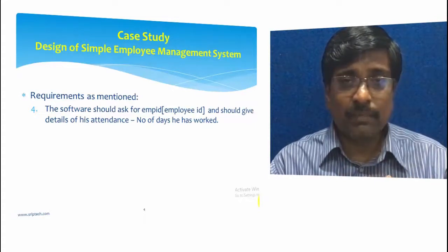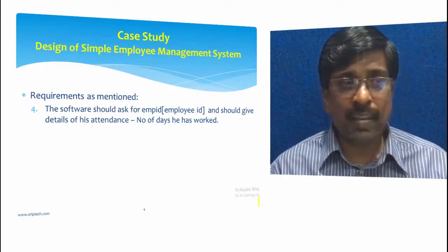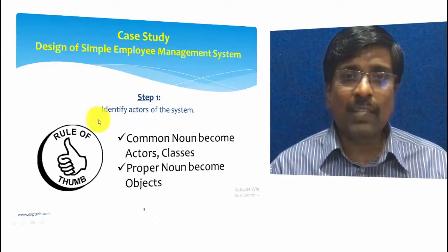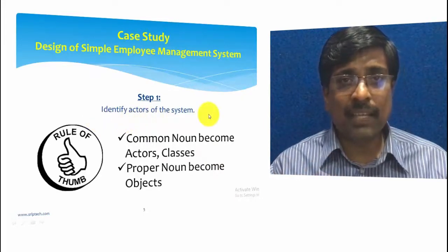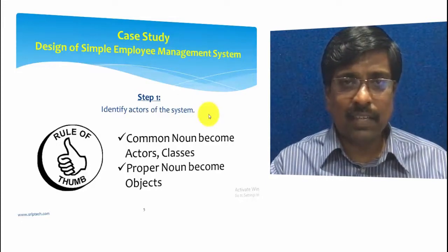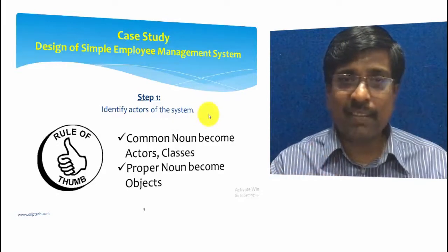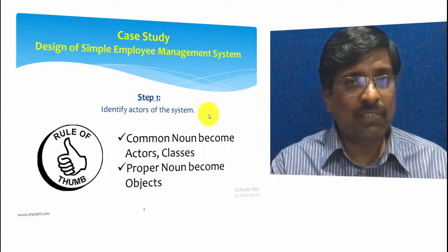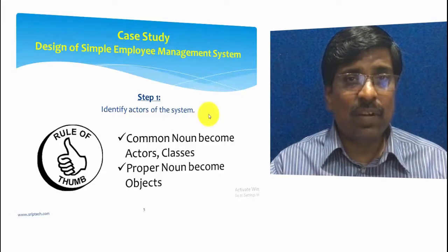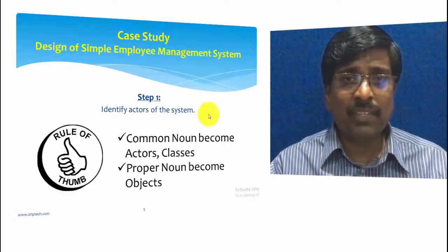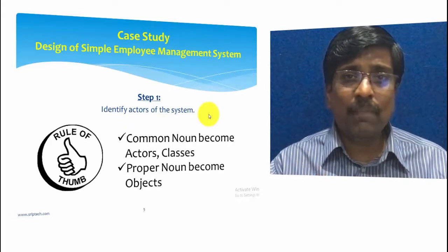Once you have understood the requirements, you need to identify two things: nouns and verbs. Nouns and verbs become the basic entities for your object-oriented design. One important rule of thumb is to identify actors of the system — the people actually involved in that system. From the case study, the actors would be: an employee, because the employee interacts with the system; security, because security is involved with the system; and an accountant, because the accountant is also involved.